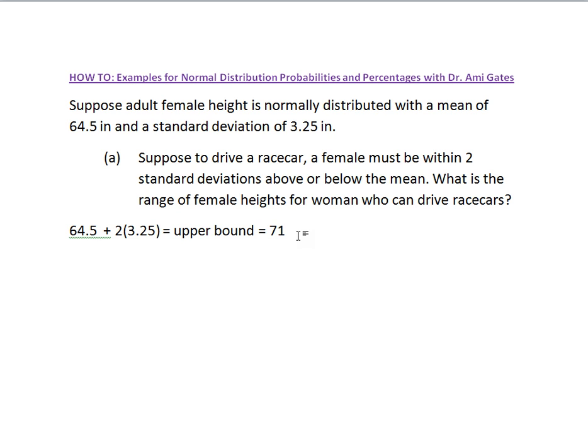We're going to do the same thing to get the shortest height or the lower bound. We take our mean again, but instead of adding, we're going to subtract away these two standard deviations. And when we remove two full standard deviations, we're going to get the shortest female that's able to drive racecars. This is going to be our lower bound, and when we do these calculations, they come out to be 58 inches.